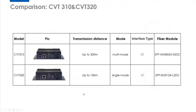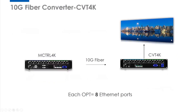Now let's see the comparison between CVT310 and CVT320. For CVT310, the transmission distance is up to 300 meters and its mode is multi-mode. For CVT320, its transmission distance is up to 15 kilometers and its mode is single mode. I also put the fiber model for your reference.